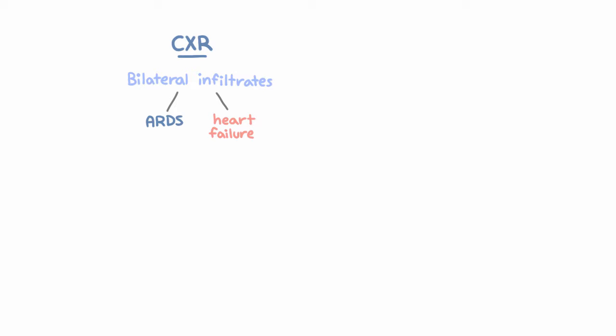If you want to distinguish between these, an echo can be pretty helpful. Other things you can see on the x-ray include pneumothorax or a large pleural effusion. Obviously x-rays are vital to evaluate for infection, including community-acquired, aspiration, or health care-associated pneumonia.